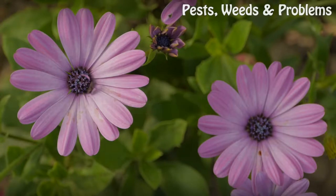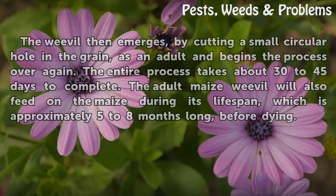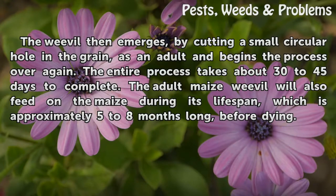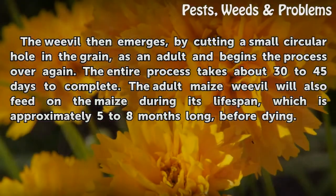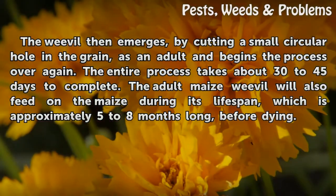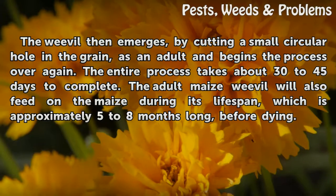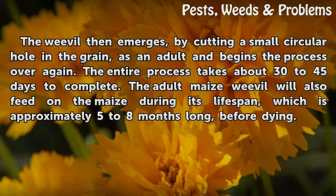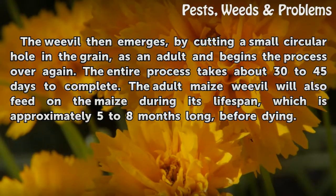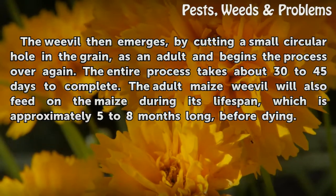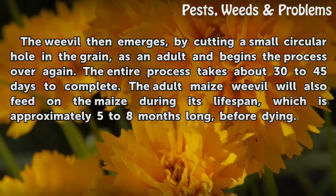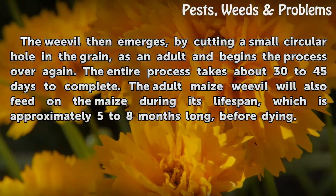Maturation. The weevil then emerges by cutting a small circular hole in the grain as an adult and begins the process over again. The entire process takes about 30 to 45 days to complete. The adult maize weevil will also feed on the maize during its lifespan, which is approximately five to eight months long, before dying.